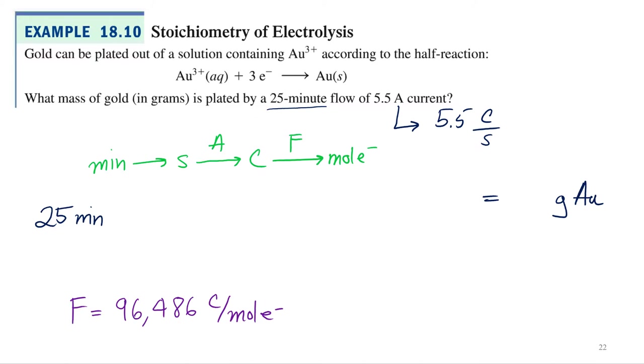Now I want to go from moles of electrons to grams of gold. What's going to be my next conversion? Moles of electrons to... Well, if we look at our reaction, we can see that for every one mole of gold, I need how many moles of electrons? Three. So I'm just going to use the stoichiometry of the half reaction to figure out how much gold I am going to produce. One mole of gold needs three moles of electrons.